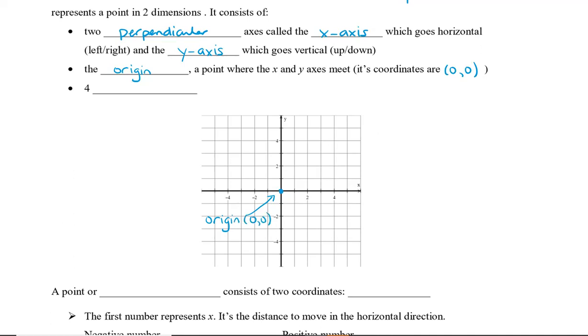The x-axis is the one that runs horizontally — that's this one here. And the y-axis runs vertically.